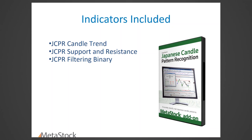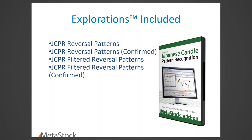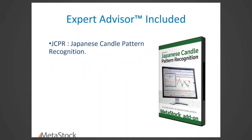The explorations included are: one that identifies reversal patterns, a more refined version called reversal patterns confirmed — where the next day's price has moved in the direction the pattern suggested — and then filtered patterns, where for bearish reversals stochastics was above 80, and for bullish ones it was below 20. There's also a confirmed version of filtered patterns. These explorations help you whittle down the number of stocks you look at. The advisor is the Japanese Candle Pattern Recognition Advisor — it shows all of this data and we're going to go through it.